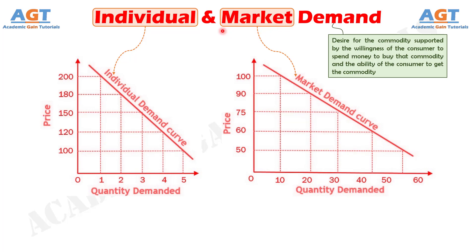For example, there are 10 consumers of detergent in the market, wherein their monthly demand for detergent is 10 kg, 5 kg, 4 kg, 6 kg, 5 kg, 3 kg, 7 kg, 12 kg, 6 kg, and 4 kg respectively. So, the market demand for detergent is 62 kg.